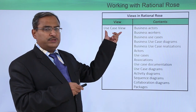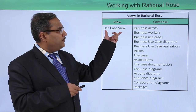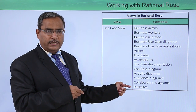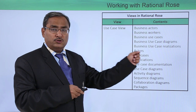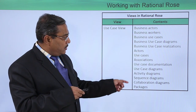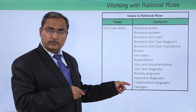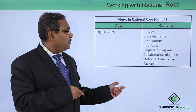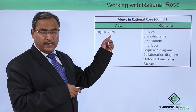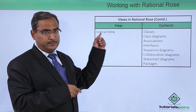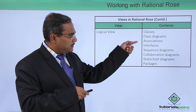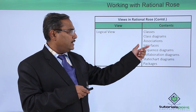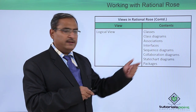If you go for the use case view, these are the respective contents you are having — you can access them to draw the use case diagram. In case of the logical view, that means for the class diagrams, these are the list of contents: classes, class diagrams, association, interfaces, and so on.